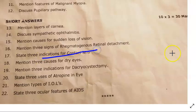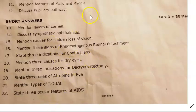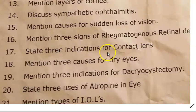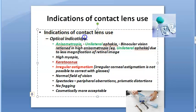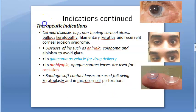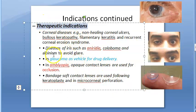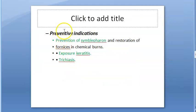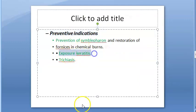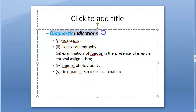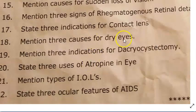Three indications for contact lens: when astigmatism or unilateral high refractive error cannot be balanced with glasses, occlusion therapy for amblyopia, and anisometropia. Categories of indications: optical (e.g., keratoconus, irregular astigmatism), therapeutic (corneal diseases, aniridia, drug delivery), preventive (symblepharon, exposure keratitis, trichiasis), and diagnostic.